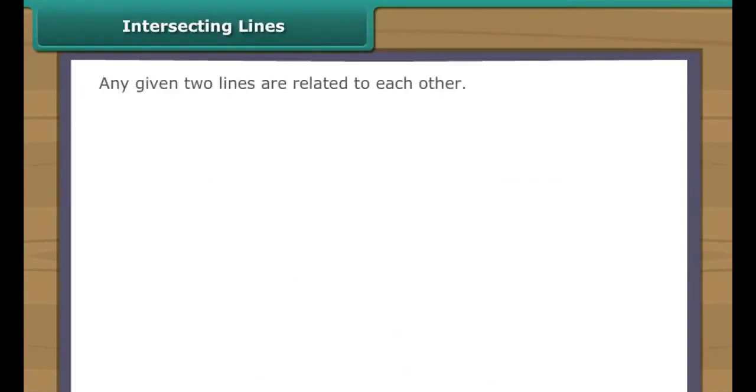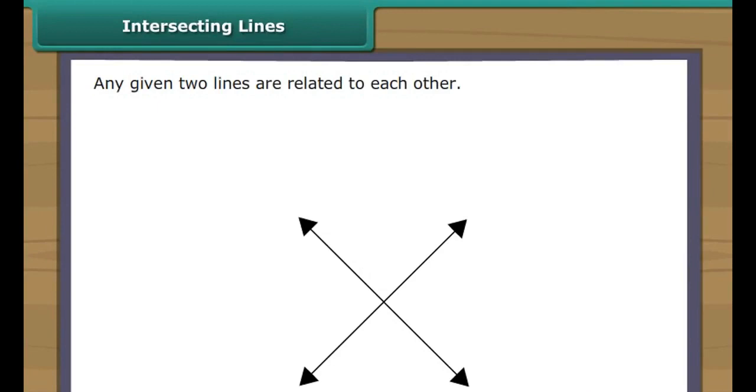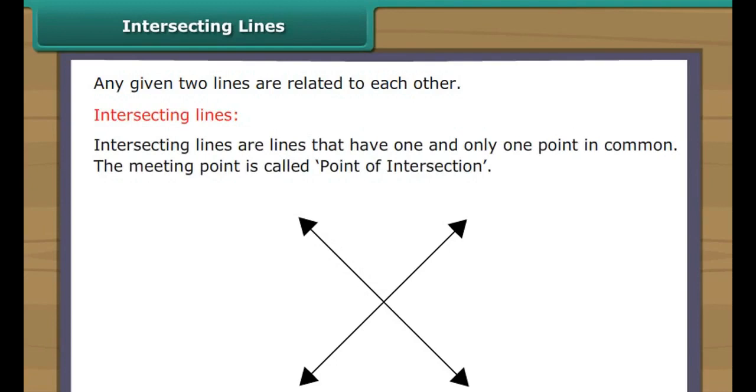Intersecting Lines. Two lines are related to each other in different ways. Let us look at each way separately. Intersecting lines are lines that have one and only one point in common. This meeting point is called point of intersection.